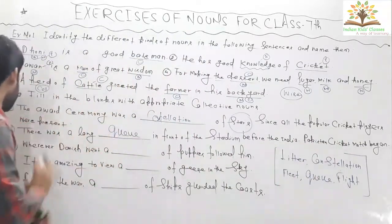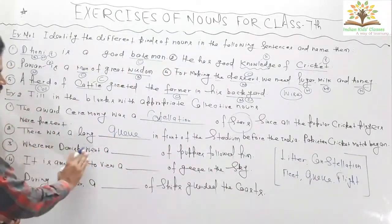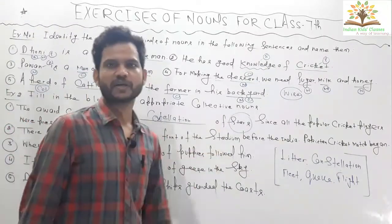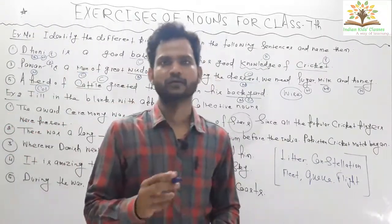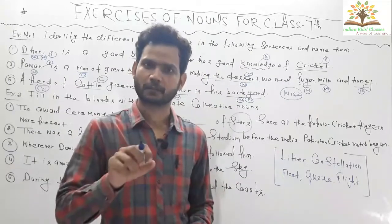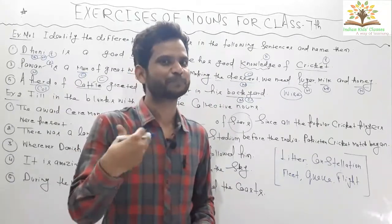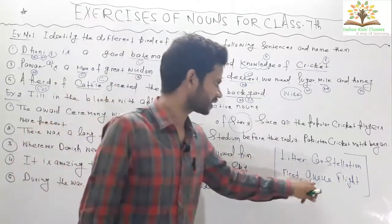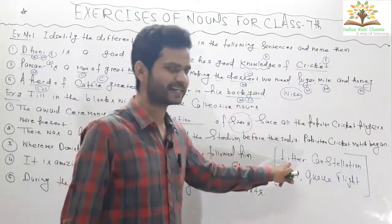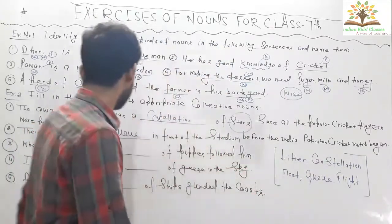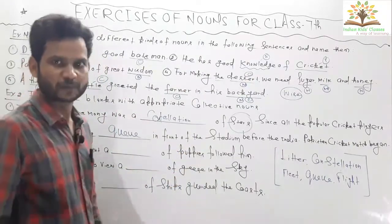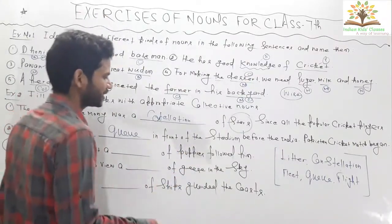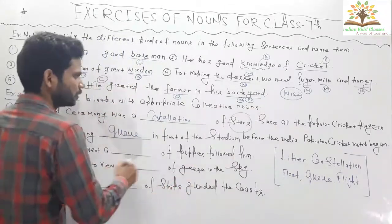Wherever Danish went, a ___ of puppies followed him. Whenever we talk about a group of puppies or a group of pig's children, that is called a litter. So a group of puppies is called a litter.